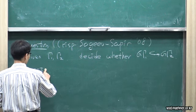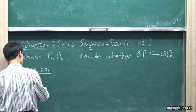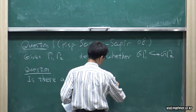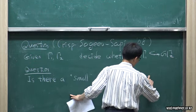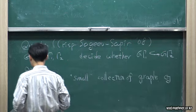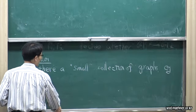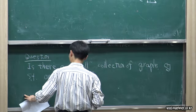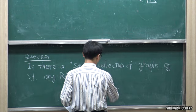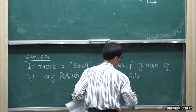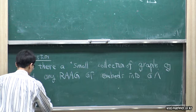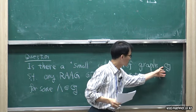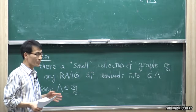A second related question is: is there a small collection of graphs G such that any right-angled Artin group G(Γ) can be embedded into G(Λ) for some Λ in G? If we take the collection G as the set of all graphs, it trivially holds. So we want some small collection.